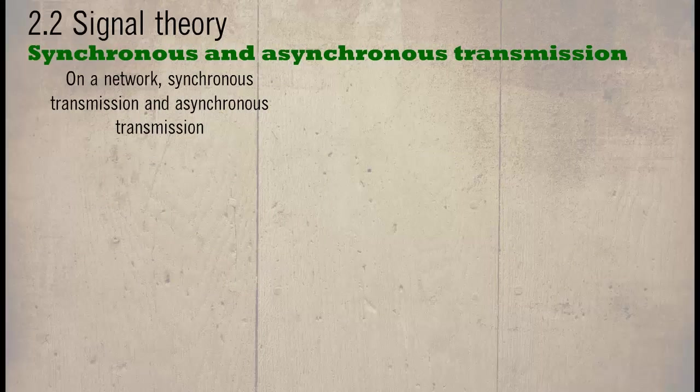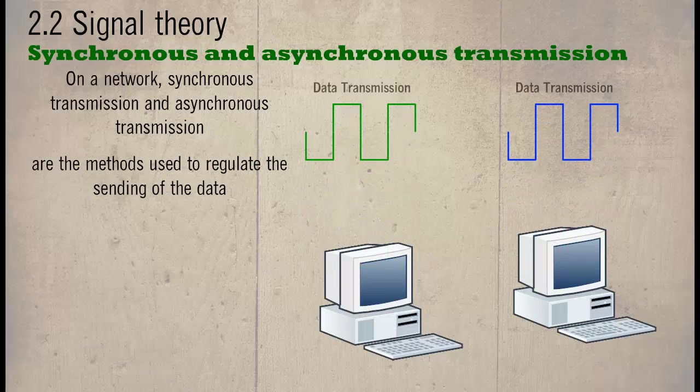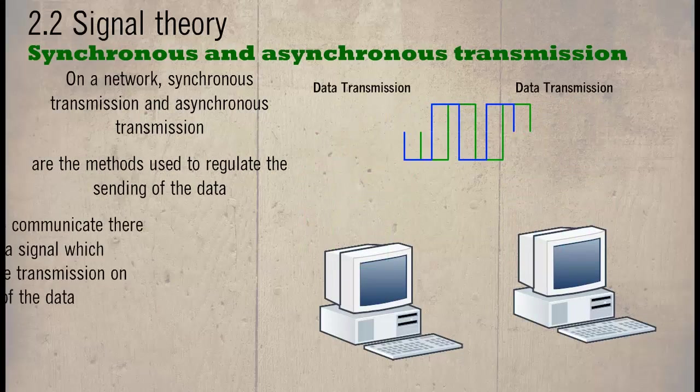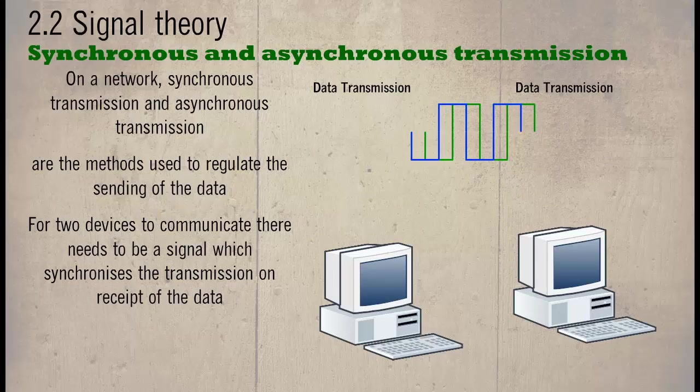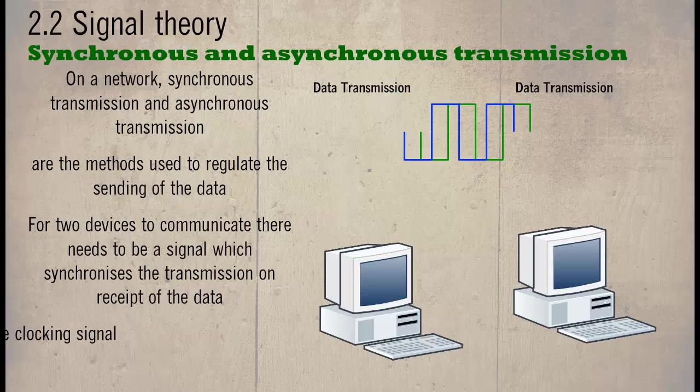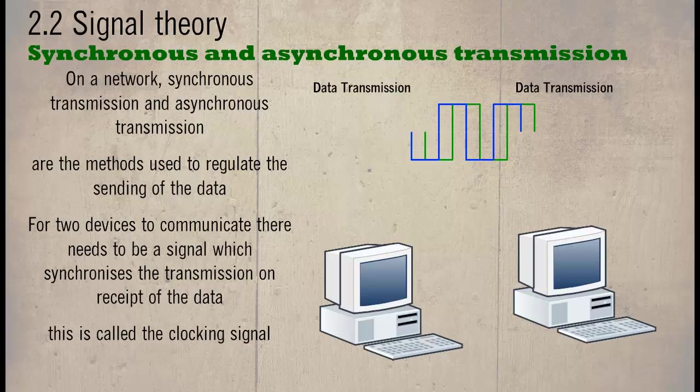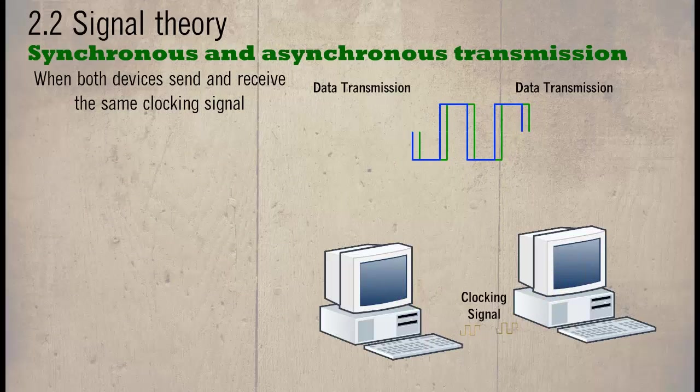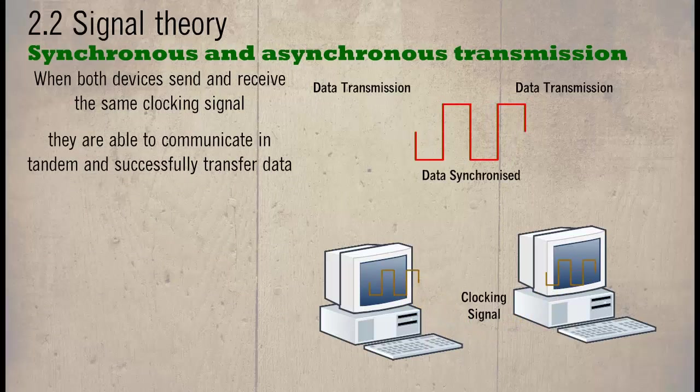On a network, synchronous transmission and asynchronous transmission are the methods used to regulate the sending of the data. For two devices to communicate, there needs to be a signal which synchronizes the transmission on receipt of the data. This is called the clocking signal. When both devices send and receive the same clocking signal, they are able to communicate in tandem and successfully transfer data.